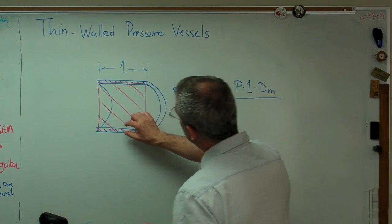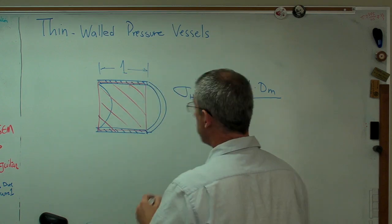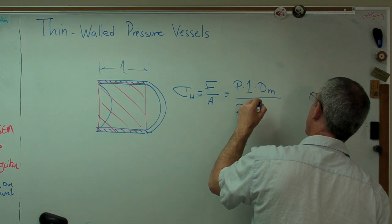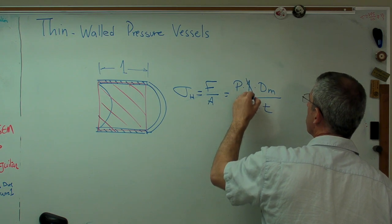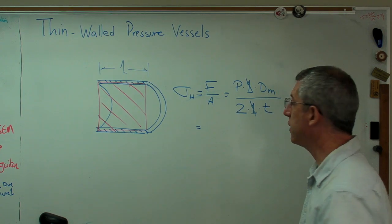An area now is thickness times one times two, because there's two thicknesses we've cut now. Two times one times the thickness. Well, those ones drop out. And what you're going to get, you can see this coming.